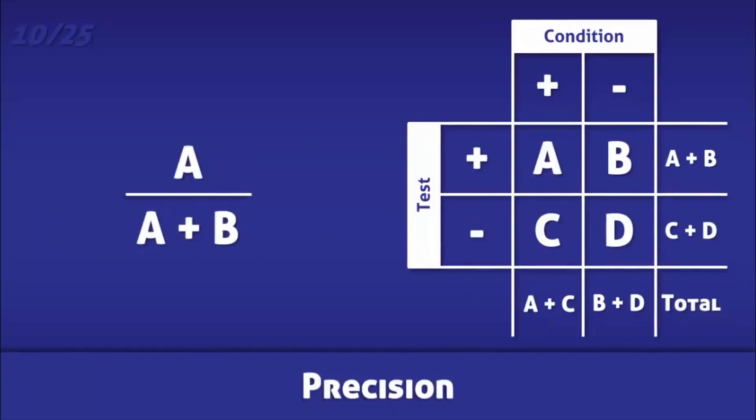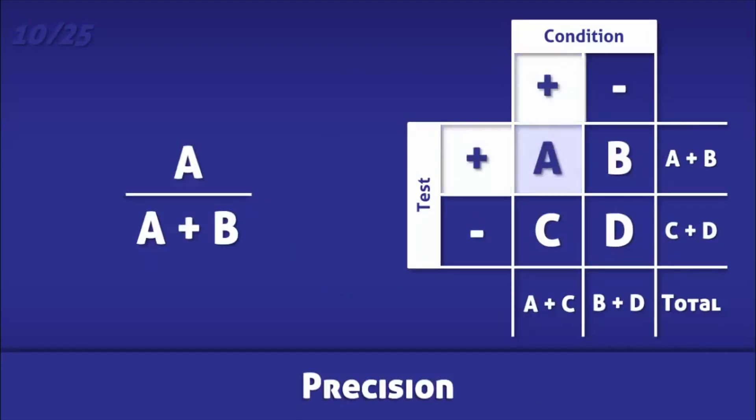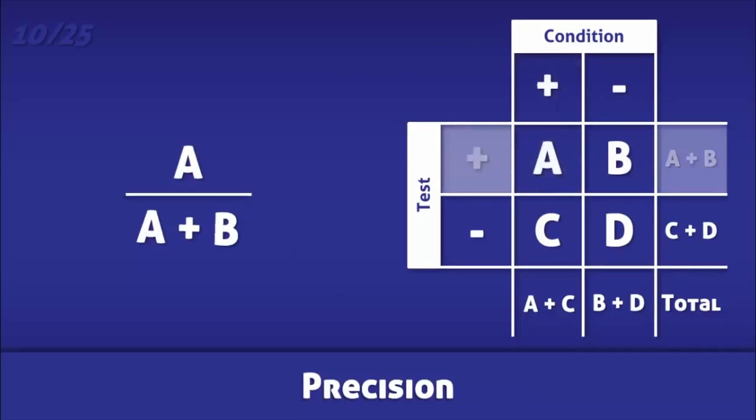Precision is the proportion of positive test results that are correct. It is calculated by dividing the number of true positives by the total number of positive tests.